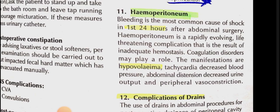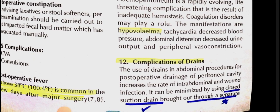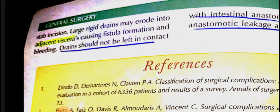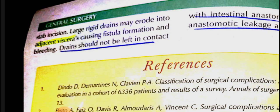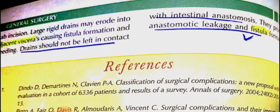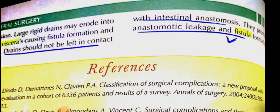Hemoperitoneum can put the patient into shock within the first 24 hours after abdominal surgery. Rule out coagulation disorders; features include hypovolemia, tachycardia, decreased blood pressure, abdominal distension, decreased urine output, and peripheral vasoconstriction. For drain complications: post-operative drainage of the peritoneal cavity carries a high risk of infection. To avoid this, use a closed suction drain through a separate stab incision — separate from the operation site incision. The drain should not be left in contact with intestinal anastomosis, as this can cause fistula formation.